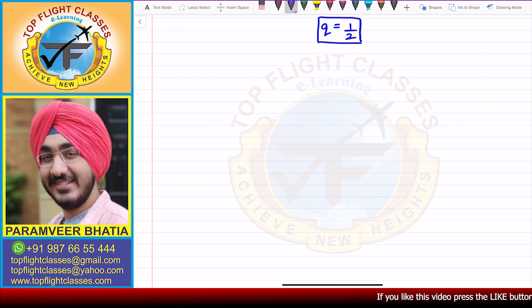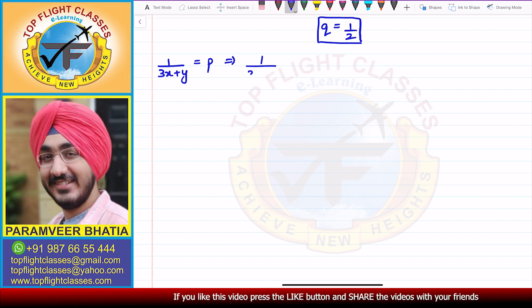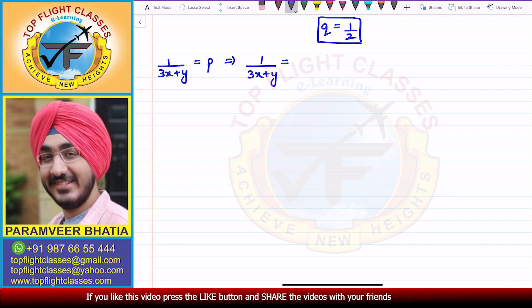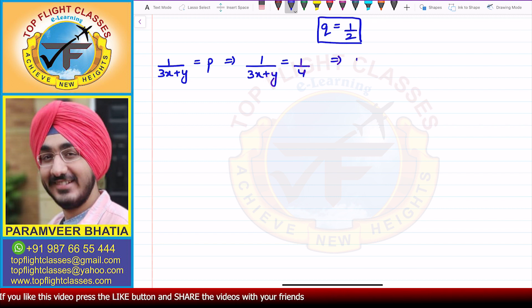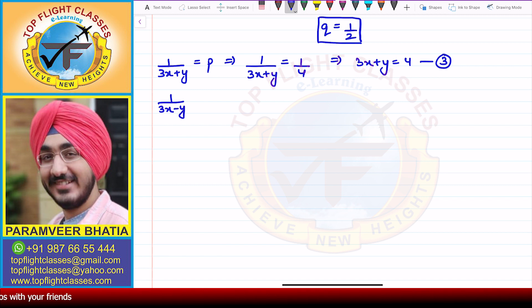Now recalling our substitution: 1 by (3x + y) equals p equals 1 by 4. This implies 3x + y equals 4. This is our third equation.